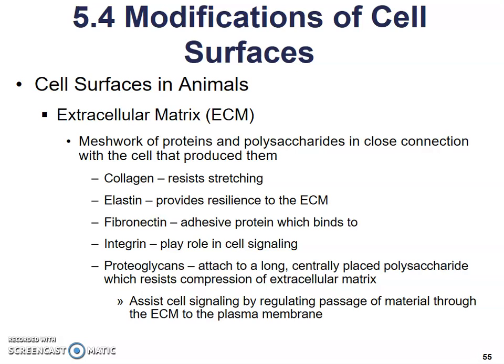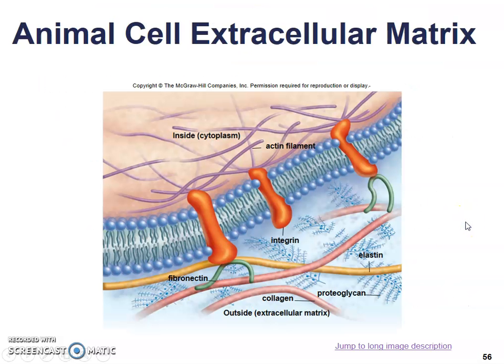Proteoglycans attach to a long, centrally placed polysaccharide which resists compression, keeping things from packing too tightly together. These assist cell signaling by regulating the passage of materials through the extracellular matrix to the plasma membrane, helping things keep moving the way they should. Here is the extracellular matrix of an animal cell.